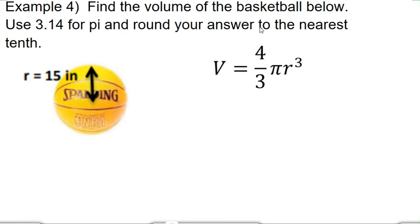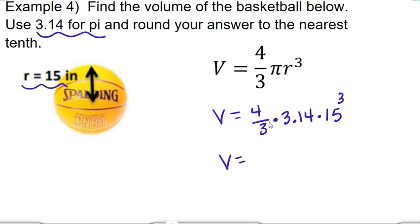Alright, and last problem. Let's do this one. Find the volume of the basketball below. Use 3.14 for pi and round your answer to the nearest tenth. Alright, so V equals 4 thirds times pi. They tell us to use 3.14. So 3.14 times radius cubed. So radius is 15 cubed. Alright, so it already gave us what the radius was this time. So that was easy. We didn't even have to calculate it from diameter because they gave it to us in the radius. Alright, so last problem, 4 thirds times 3.14 times 15 cubed.